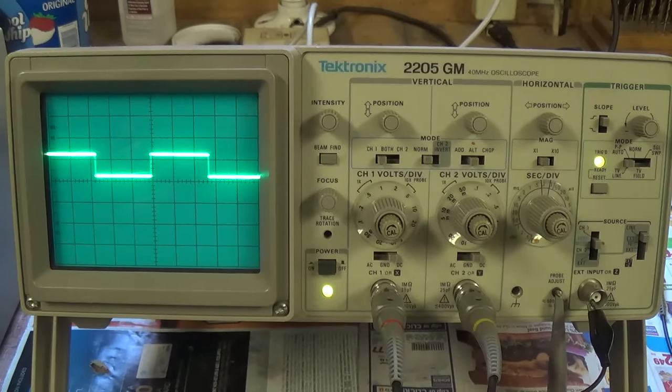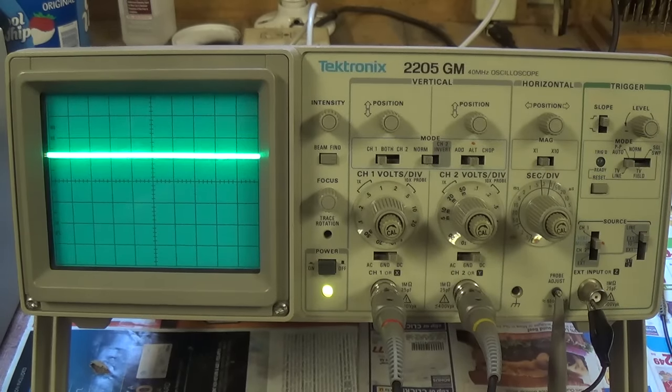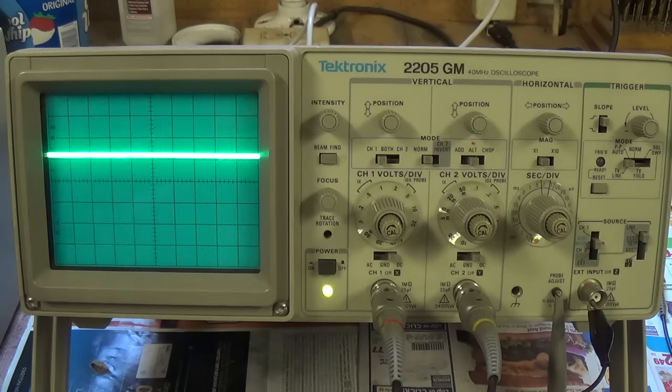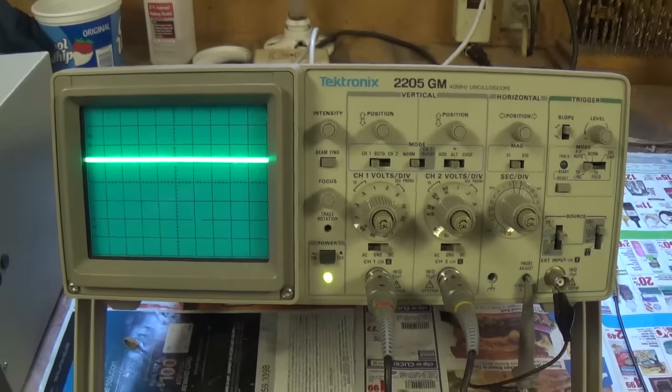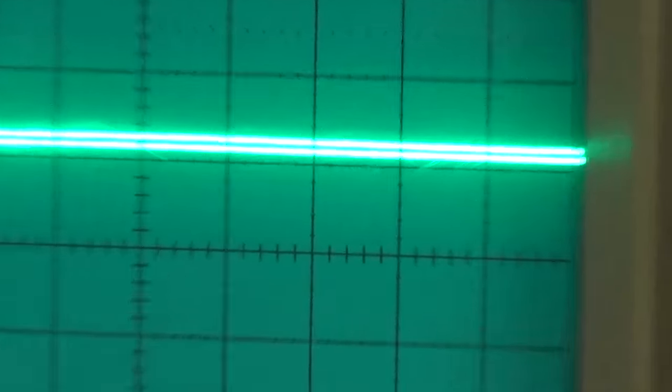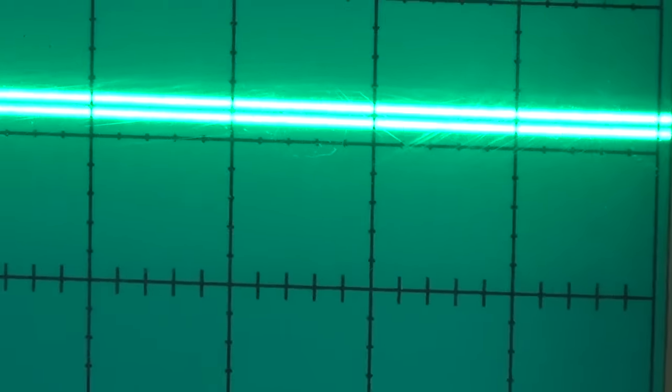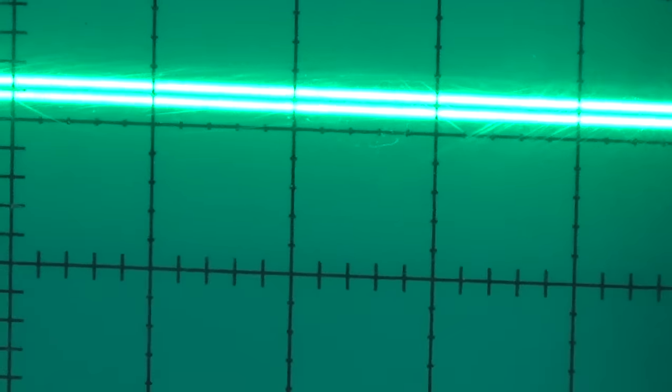However, when I shift to times 10, my scope image becomes one-tenth as high. Now it is, if I home in here, actually two separate lines, one-tenth as high as they were when I was at X1.